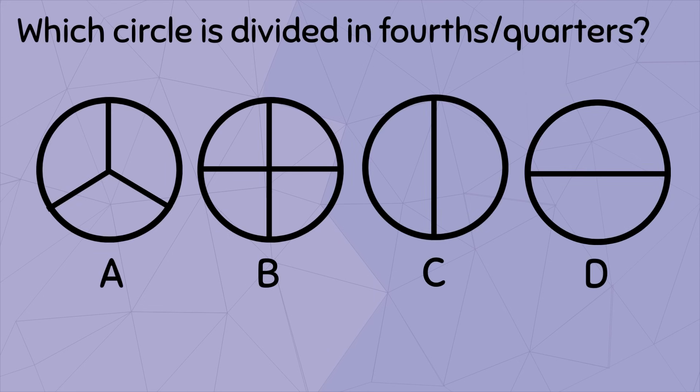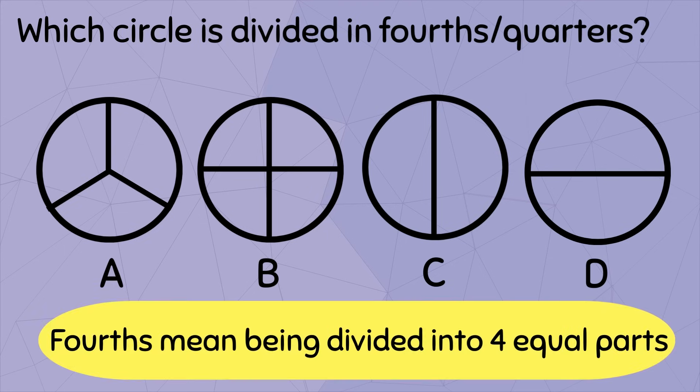While square D has two parts that have the same exact size. Let's move on to these circles. This time, let's find the circle that's divided into fourths, which can also be called quarters. As long as it's divided into four equal parts, that's what we're looking for.